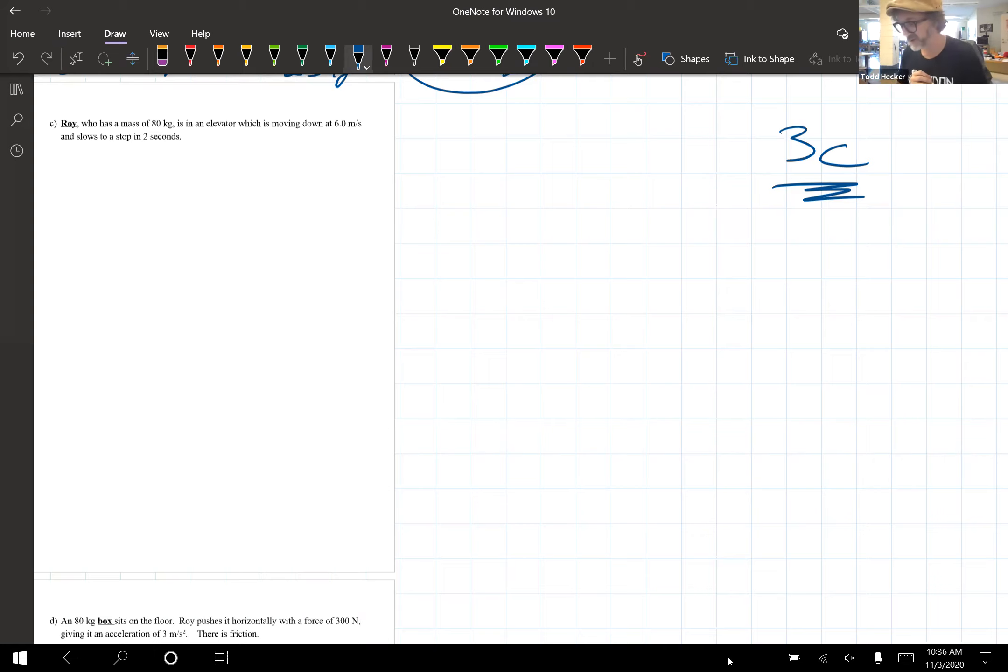So let's do this one. So it says Roy, who has a mass of 80 kilograms, is in an elevator that is moving down at 6 meters a second. So let's start with all of that information. So here's the floor of the elevator, here's Roy. I'm just going to draw his head, 80 kilograms.